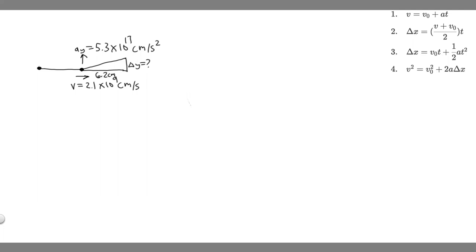The first thing you always want to do is draw what's going on. So we have this particle traveling at a velocity of 2.1 times 10 to the 9 centimeters per second. Then it gets hit and its acceleration in the y becomes 5.3 times 10 to the 17 centimeters per second squared. At that point it starts traveling upwards, but it's still moving horizontally. We want to find how long it takes to travel 6.2 centimeters and how far it travels in the y.